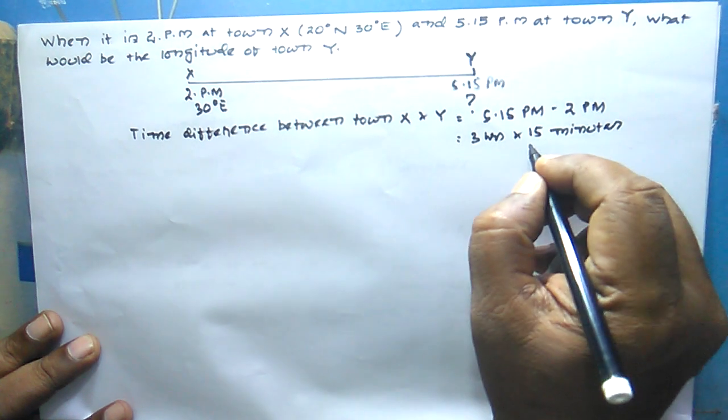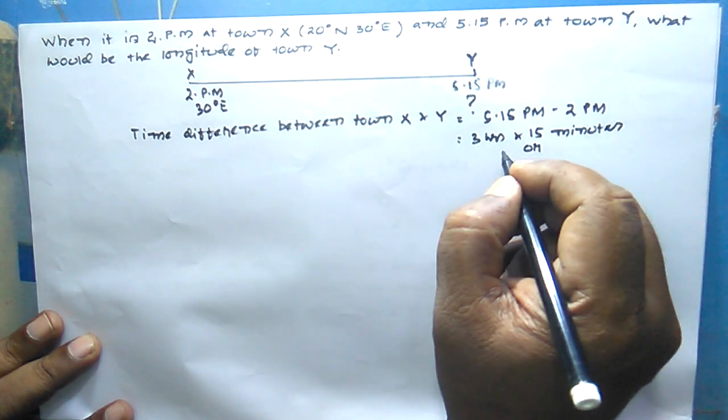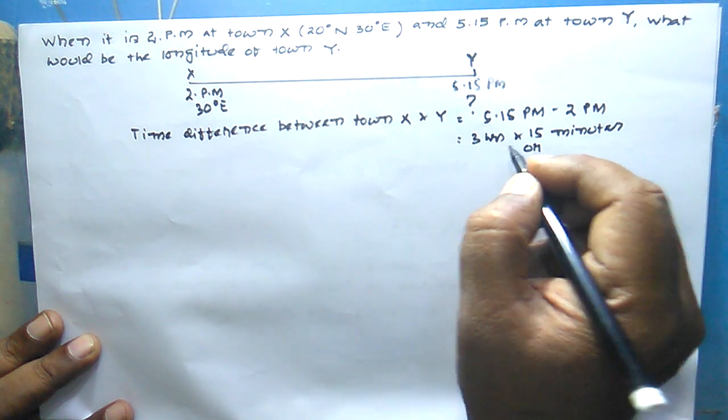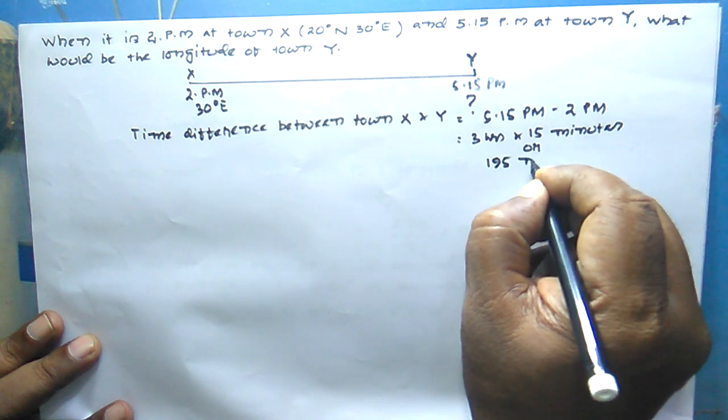We have to convert this totally to minutes. 3 hours is 3 into 60, that is 180, giving us 195 minutes.